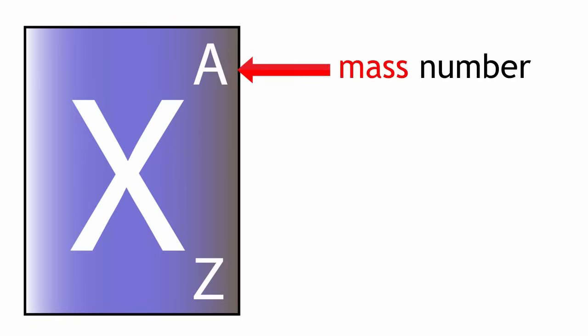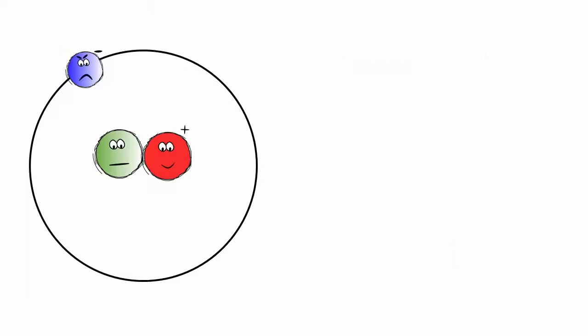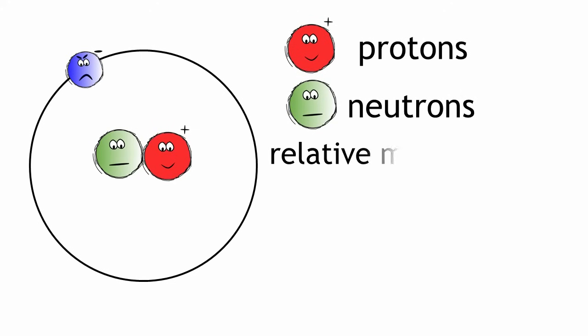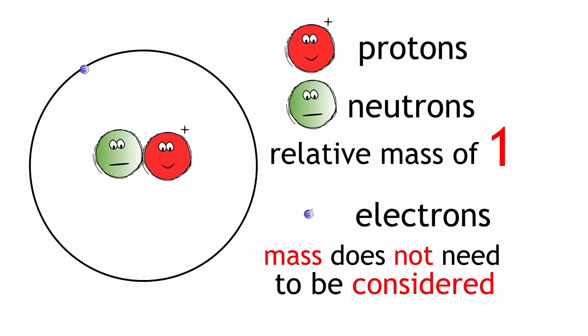The next number we look at is the mass number. The mass number has a symbol A. The mass number tells you how many protons and neutrons are in one atom of an element. We need to remember that protons and neutrons each have a relative mass of 1, and that electrons are so small that their mass does not need to be considered in the mass number of an atom.